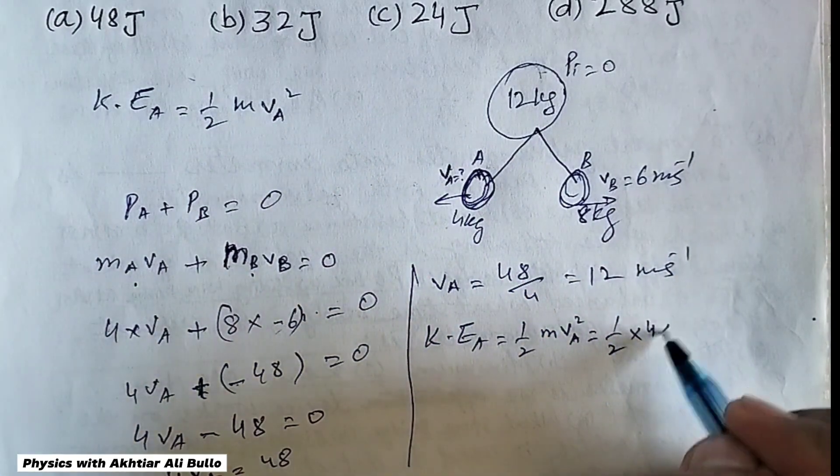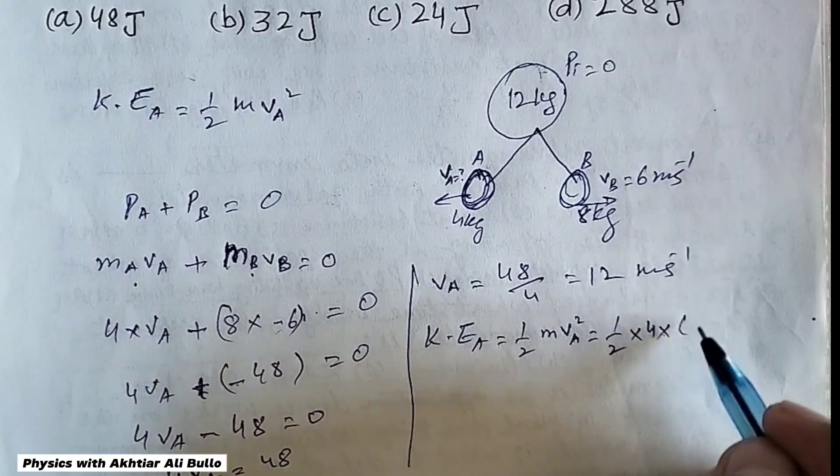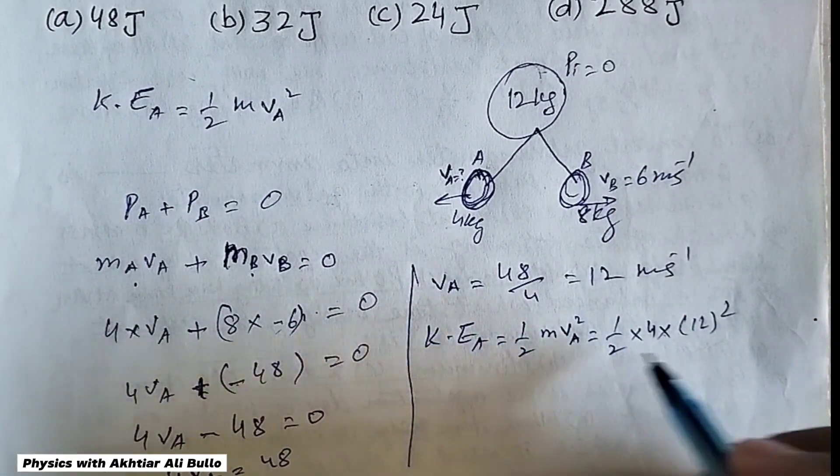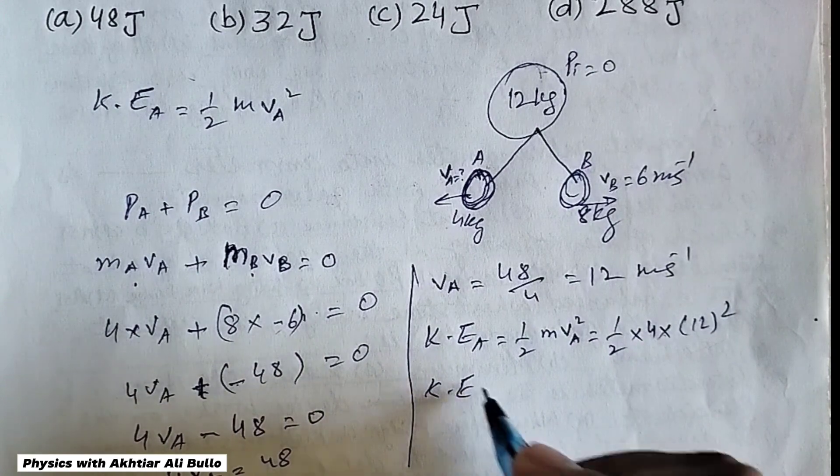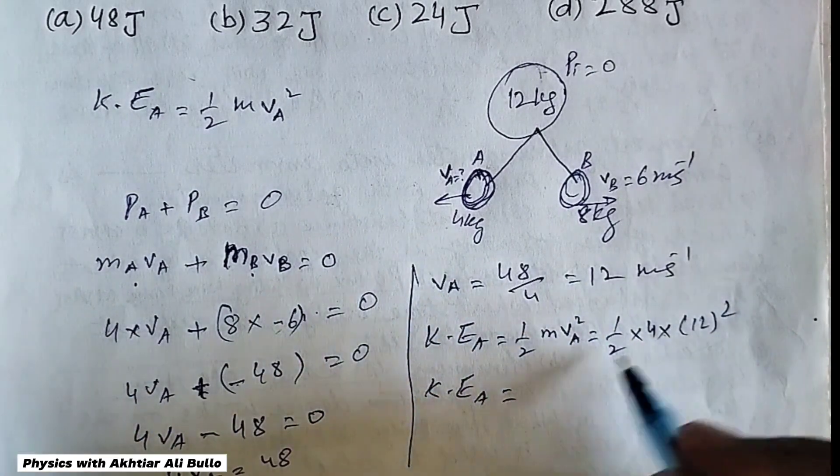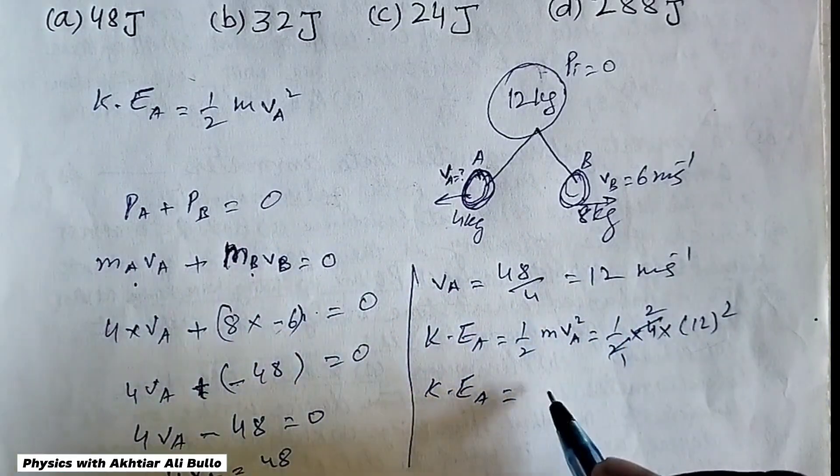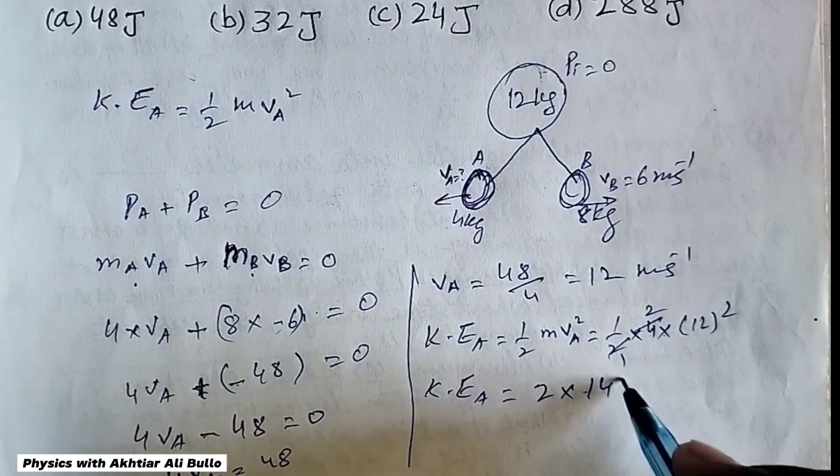So 4 into the square of 12, the magnitude of velocity of A is 12, so kinetic energy will be 1/2 × 4 = 2, times the square of 12 is 144.